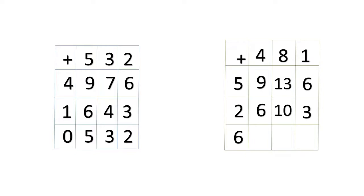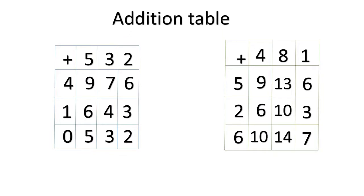We will go to the next number. We are done adding all numbers with two. We will start with number six. Six plus four is ten, six plus eight is fourteen, and six plus one is seven. Did you understand, children? This is called an addition table.